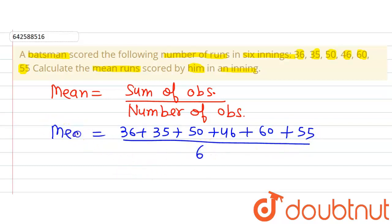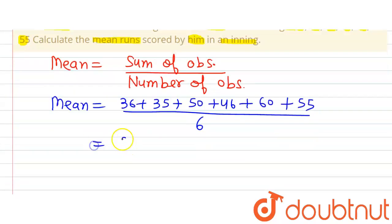Now let's add the terms that are present in the numerator. So when we add the terms that are present in the numerator, we will get 282 in the numerator divided by six, which will give us 47.